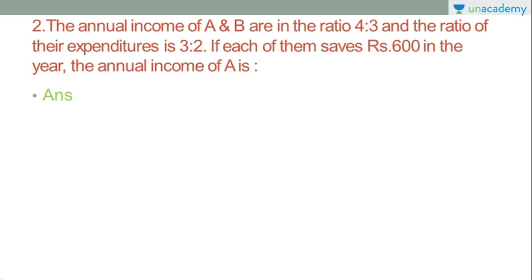Second problem: Annual income of A and B are in the ratio 4 is to 3, and the ratio of their expenditures is 3 is to 2. If each of them saves Rs.600 in the year, find the annual income of A. We will use the ratio equalling method with the direct ratio approach.